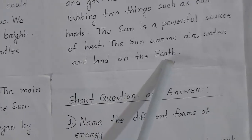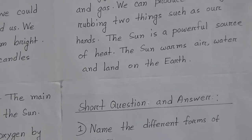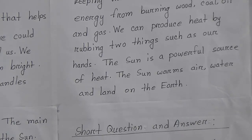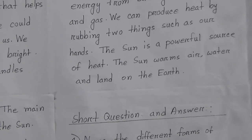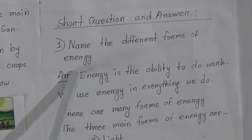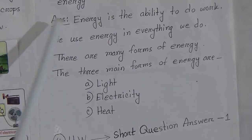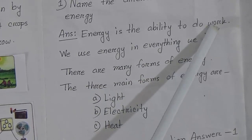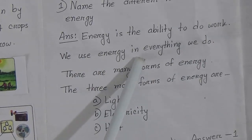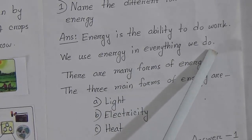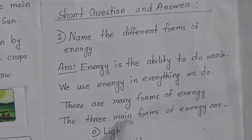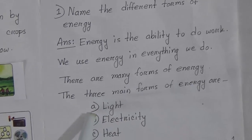Dear students, today we will discuss a short question and answer. The question is: name the different forms of energy. The answer: Energy is the ability to do work. We use energy in everything we do. There are many forms of energy. The three main forms of energy are light, electricity, and heat.